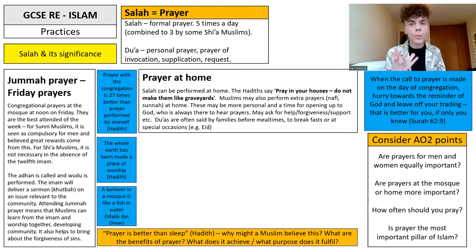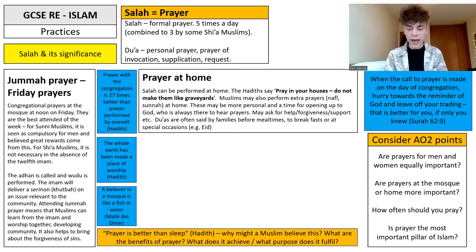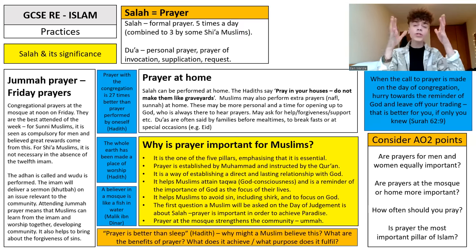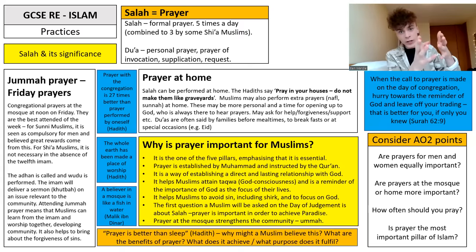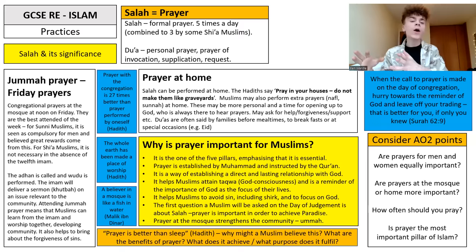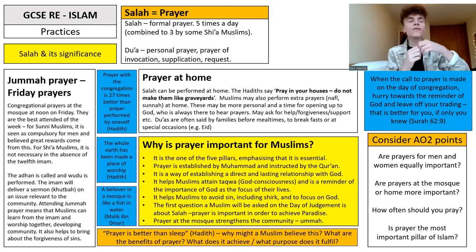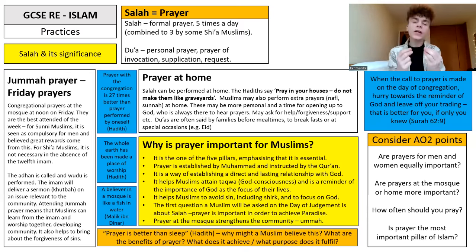Dua prayers are personal prayers — prayers of invocation, supplication, or request. They can often be said by families during mealtimes, to break fast, or on special occasions like Eid. So we have Salah as formal prayer — five times a day, or sometimes combined to three by some Shia Muslims — and then Dua prayer, which is that personal, more spontaneous prayer where you are making a prayer of invocation, supplication, or request.